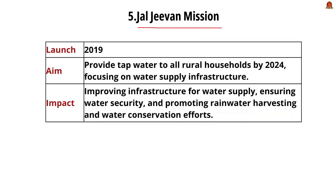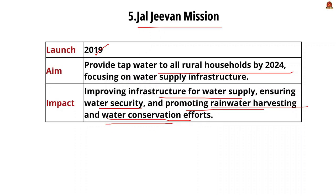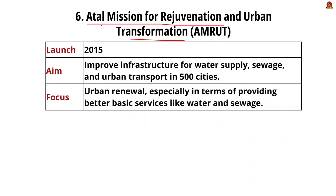The next initiative is Jal Jeevan Mission, launched in 2019. Its objective is to provide tap water connections to all households in rural India by 2024. It aims to improve water supply infrastructure, ensuring water security and promoting rainwater harvesting and water conservation efforts. Please note that rainwater harvesting and water conservation are also key parts of Jal Jeevan Mission, besides providing tap water connections.